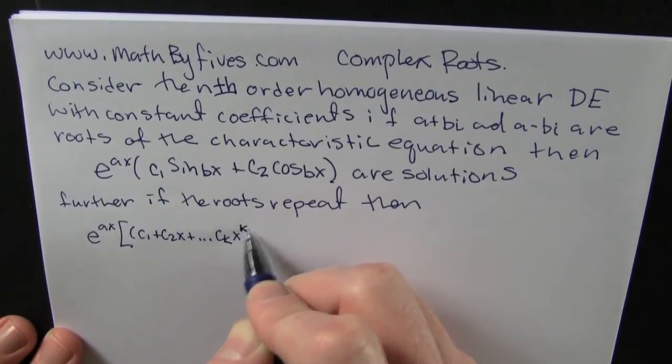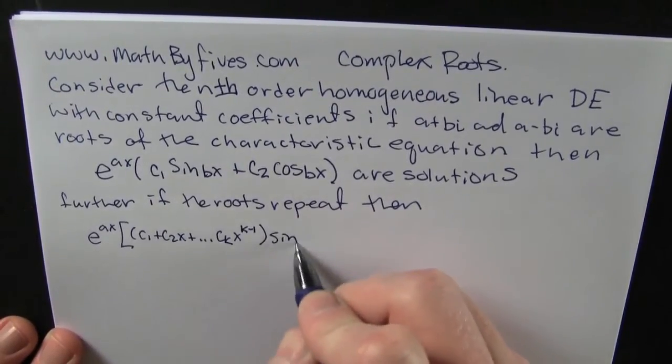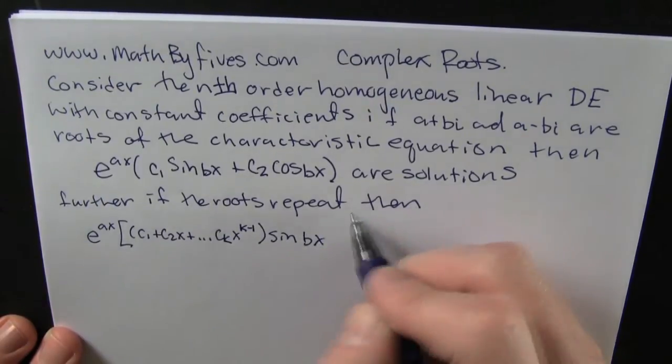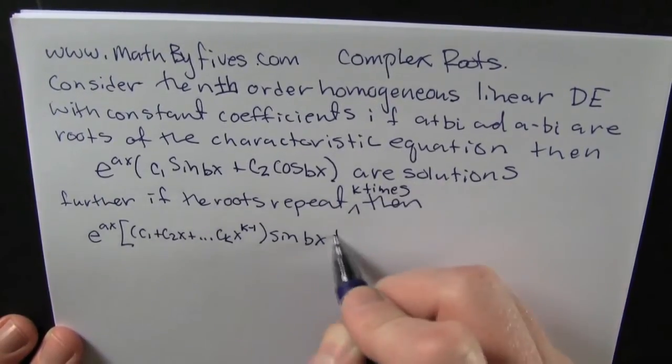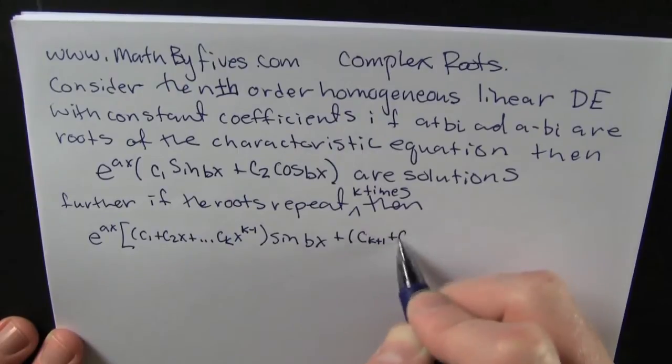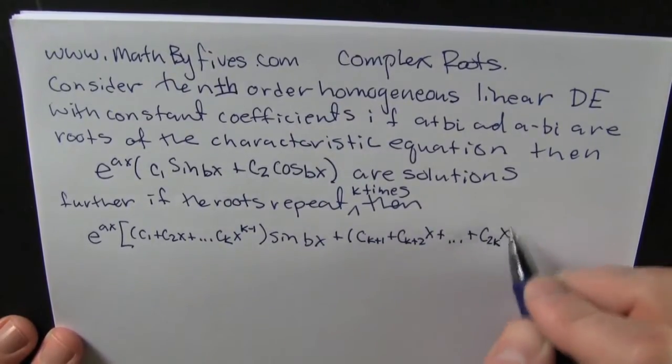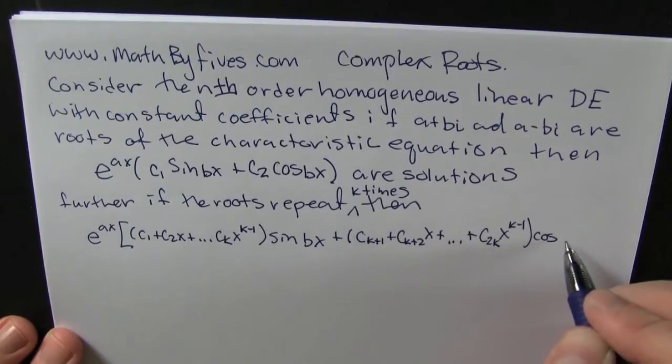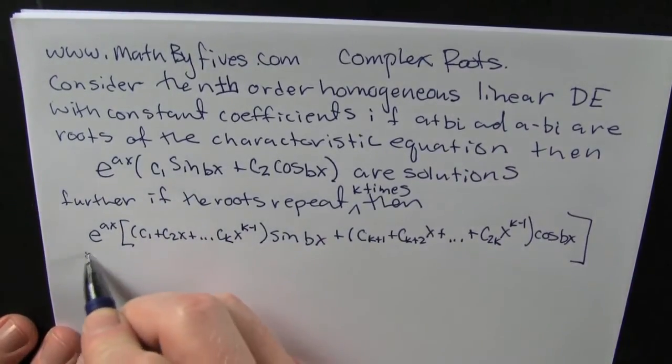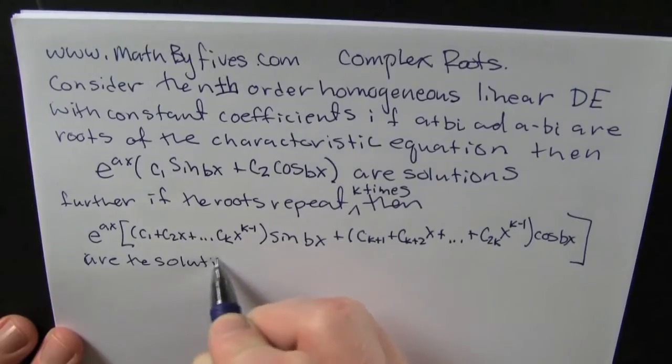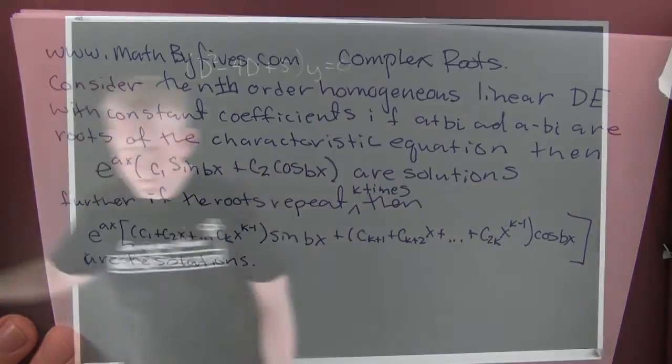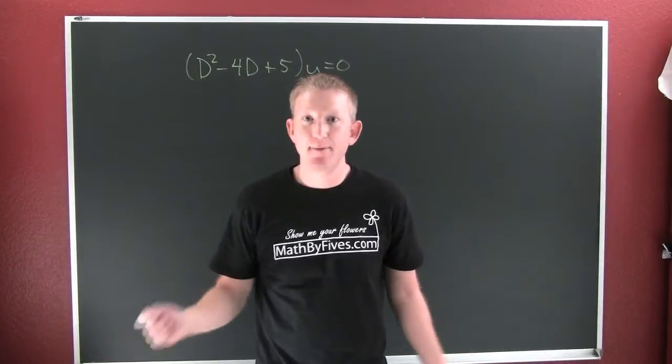Where e is still raised to the real part and the sine of the imaginary part of x. That's how we're going to get our k independent solutions. But now I suppose you want to see an example of these complex eigenvalues or roots.